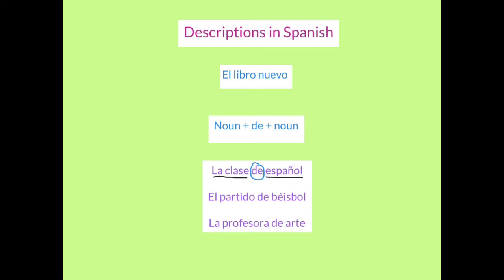we couldn't ordinarily just put español right next to clase because it's not an adjective. But by adding it with de, this whole thing sort of starts acting like an adjective so we can describe the class using what would normally be a noun.